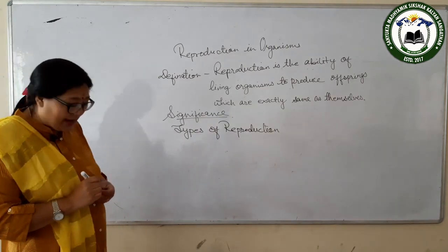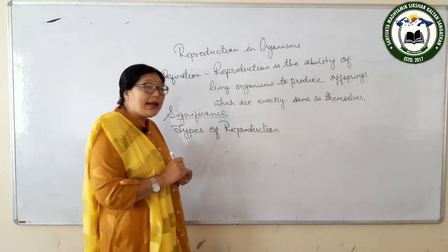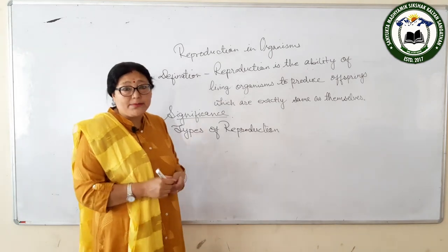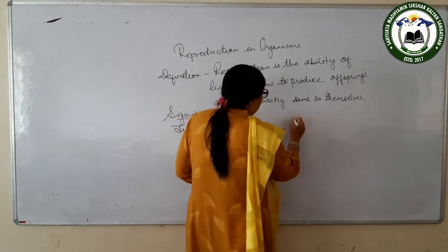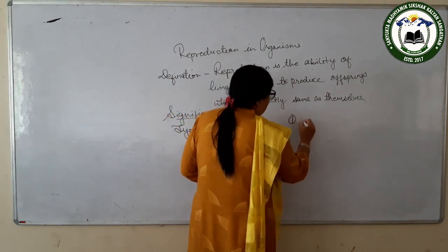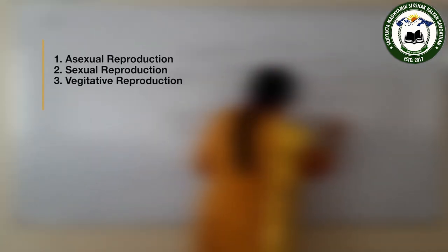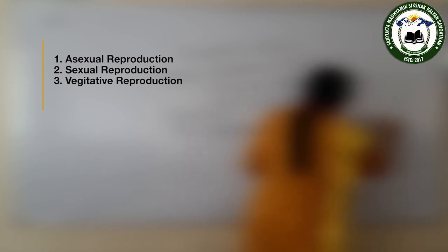Now, types of reproduction. There are three types of reproduction: the first one is asexual reproduction.